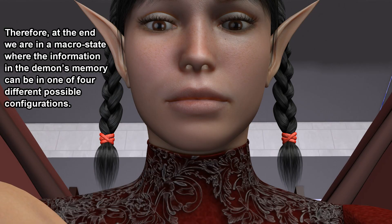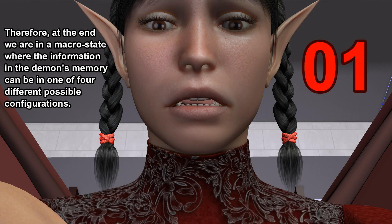Therefore, at the end we are in a macrostate where the information in the demon's memory can be in one of four different possible configurations.